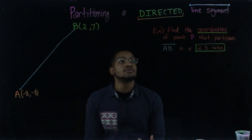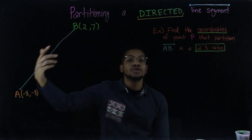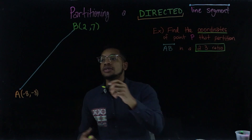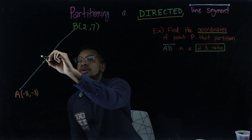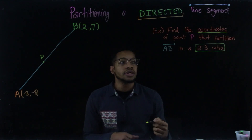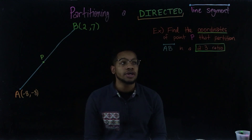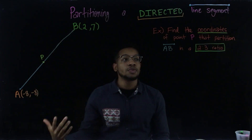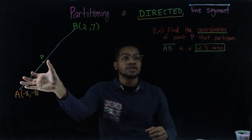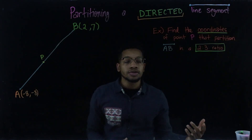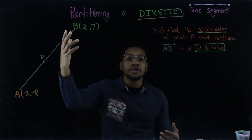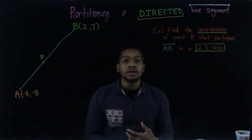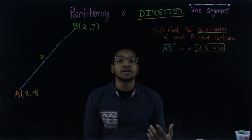This problem tells us to find the coordinates of point P that partitions segment AB into a 2-to-3 ratio. There are a couple of things in that problem to talk about. We have some point P and we don't know where it is. You're trying to find the coordinates of that point that partition AB into a 2-to-3 ratio. Partition basically means it divides this big segment so that from A to P is two parts and from P to B is three parts. If you imagine the whole thing divided into five equal parts, two of those five parts are from A to P and the remaining three parts are from P to B. We've got to figure out a way to find the coordinates of point P.